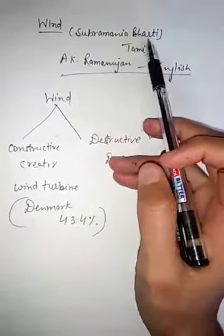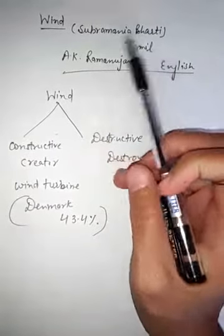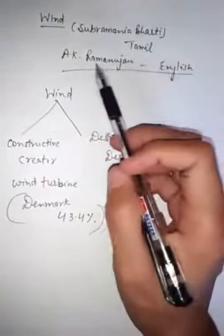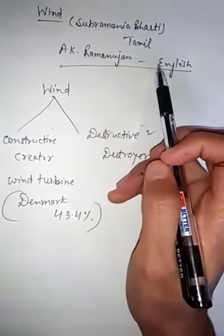Wind is written by Subramanian Bharti in Tamil language, but it is translated by A.K. Ramanujan in English.